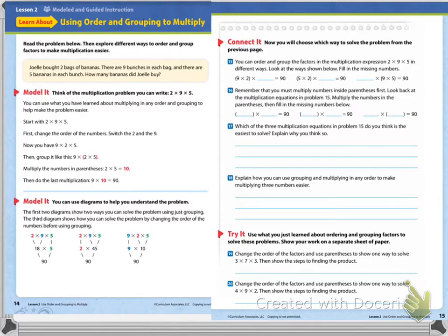Look at our problem in this tan-ish, yellow-ish box. We have: Joel bought two bags of bananas. There are nine bunches in each bag, and there are five bananas in each bunch. How many bananas did Joel buy? I'm going to underline our question so I know what I'm answering. In each of those bags, there are nine bunches of bananas, and on each bunch, there are five bananas.